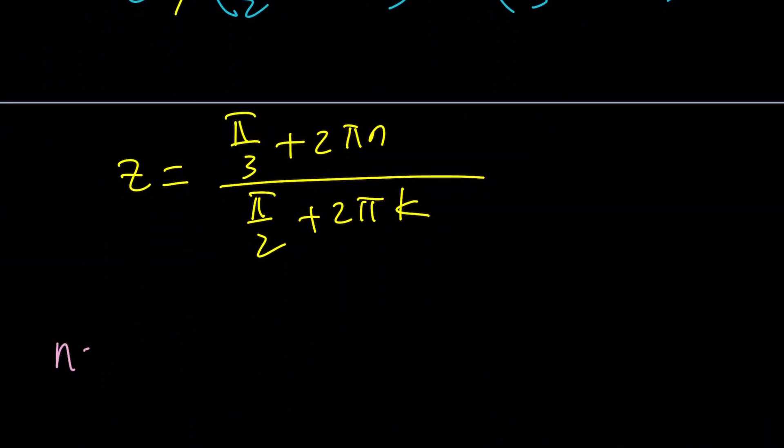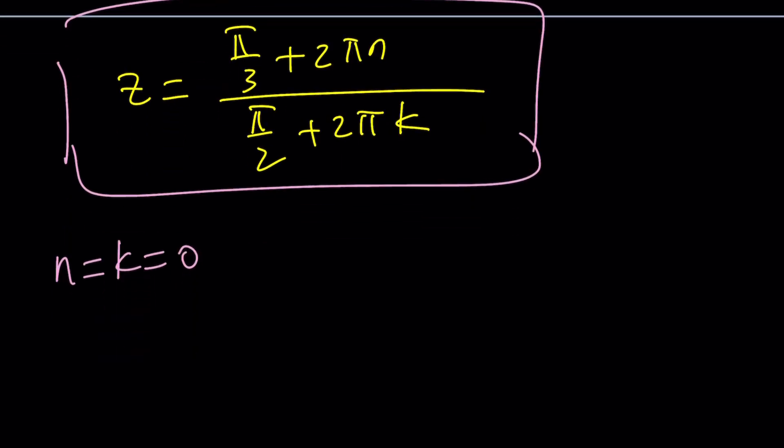So let's go ahead and go with the easy route. We already found the general solution. And now what happens if you replace n and k both with 0? Then you get something like z equals pi over 3 divided by pi over 2. And what happens here is the pi cancels out, leaving us with 1 third divided by 1 half, which is 2 thirds. So z equals 2 thirds is a solution. Are you serious?